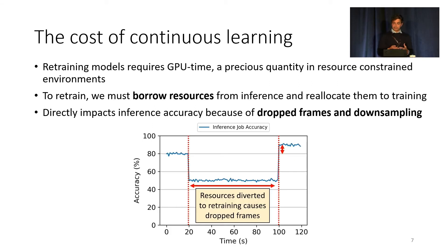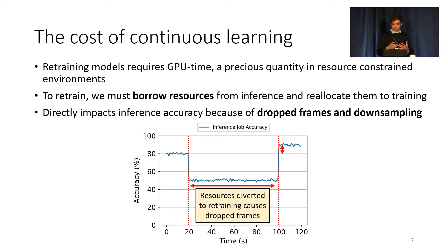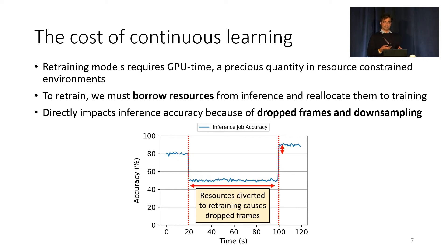Consider this example, which demonstrates how retraining affects inference jobs. We start an inference job at t=0 with 80% accuracy. At t=20, a retraining job starts running in the background and takes resources from inference. Because these resources have been diverted, the inference accuracy drops since the inference job is now dropping frames. At t=100, the retraining completes, the retrained model is loaded into inference, and you see a slight increase in accuracy at the end.